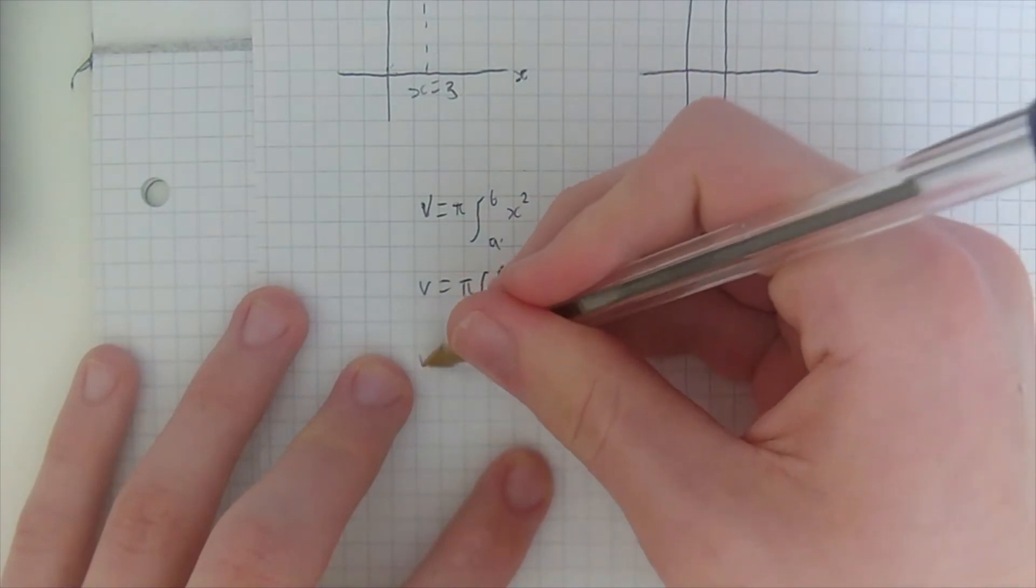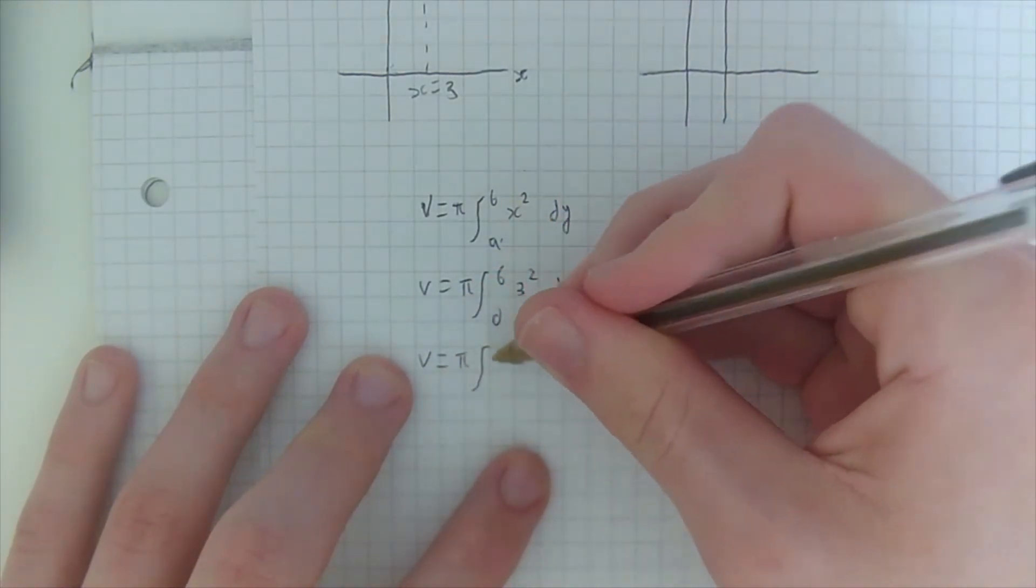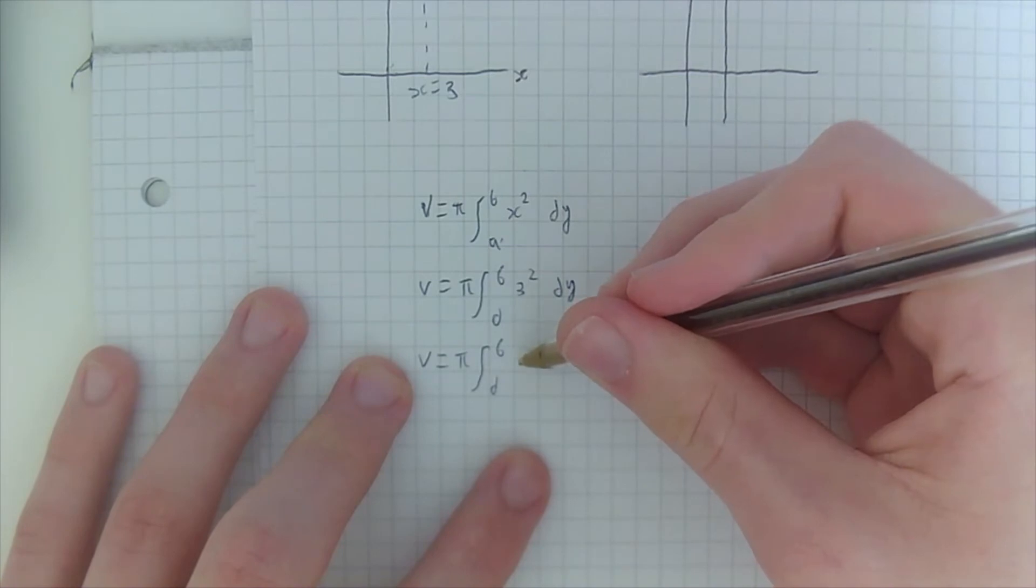Now of course 3 squared is 9, so volume equals pi from 0 to 6, 9 dy.